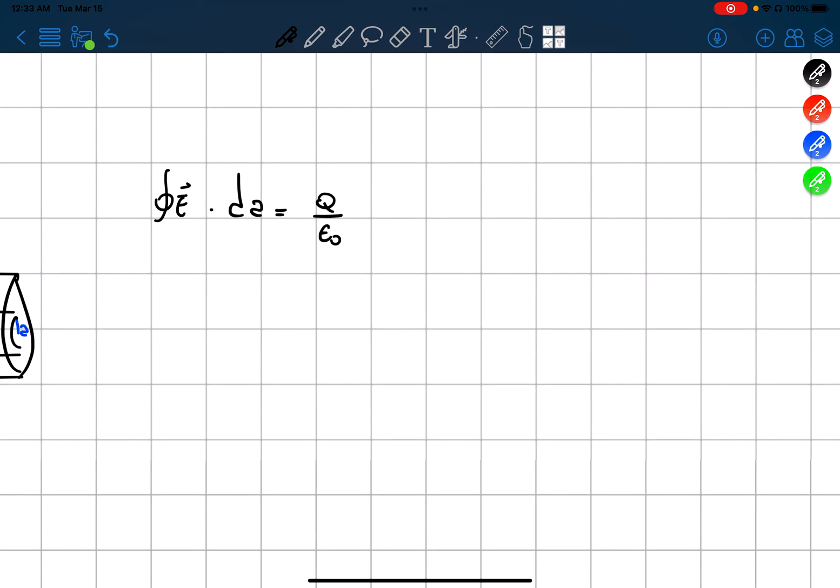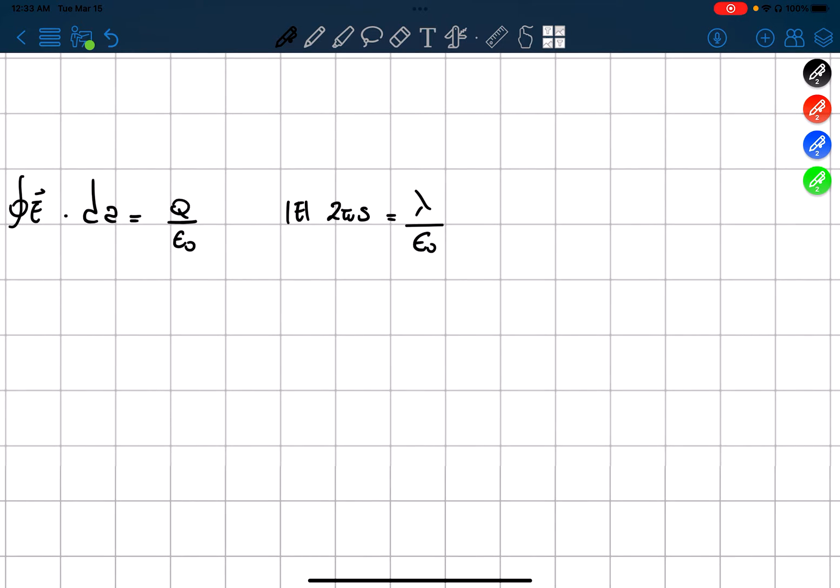What does this equal to? This is going to be equal to E, 2πs is equal to λ over epsilon nought. So the electric field is equal to λ over 2πs epsilon nought in the s direction, of course.